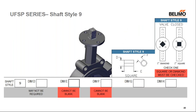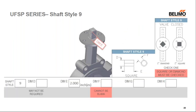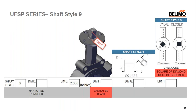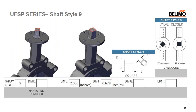Shaft style nine is a square shaft. Dimension D may not be required if the shaft is square all the way down. Dimension E is the length of the square, and dimension F is the flat-to-flat measurement. A required field asks whether the shaft looks like a square or a diamond when the valve is fully closed — checking the appropriate box clears the red field.